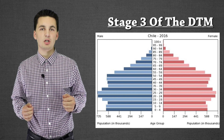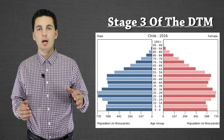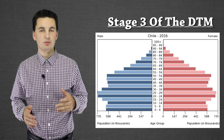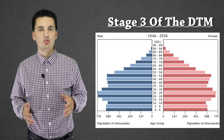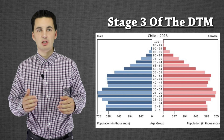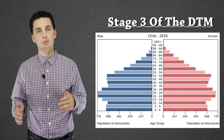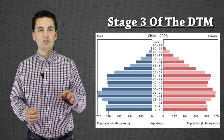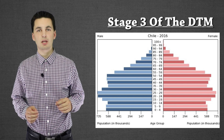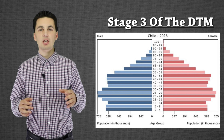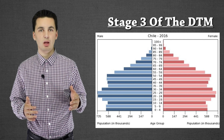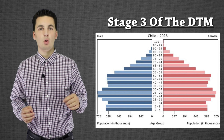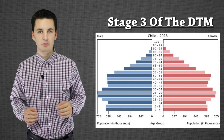Other things that can move a country from stage two to three include government regulation of population. China, India, and Chile have done this — governments promoting family planning or putting laws to limit how many kids you can have. You can sometimes see the effects within a population pyramid as irregular shapes show a change in policy, allowing more kids to be born and then a decrease.